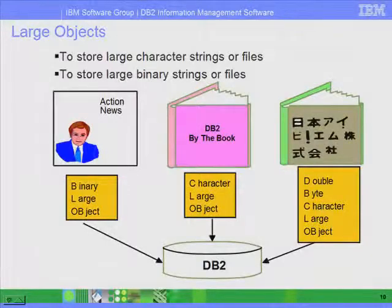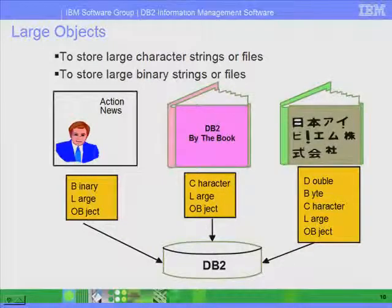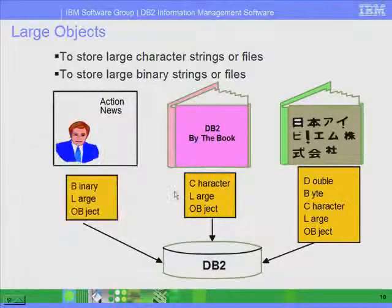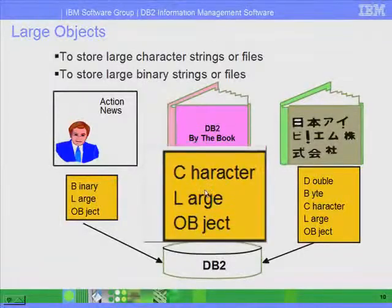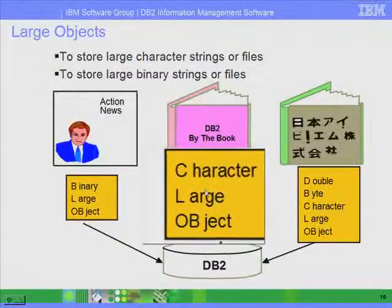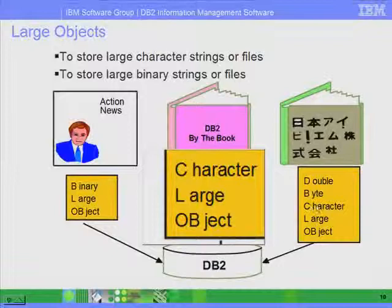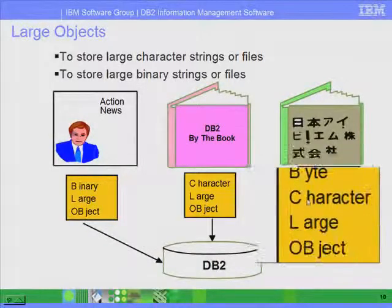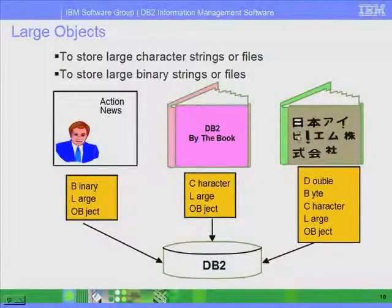We'll talk more about the XML data type in a different lesson when we cover pure XML. We support large objects as well. For example, if you store large binary files, you would use BLOB. If you use large character strings, you can use CLOB, or character large object. You could also use DBCLOB when you want to store double-byte characters, like Chinese.